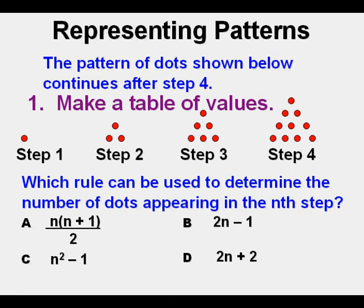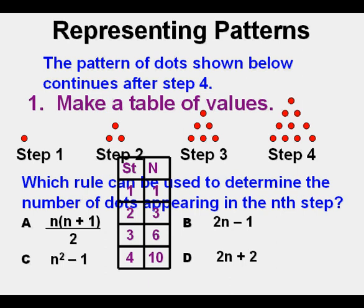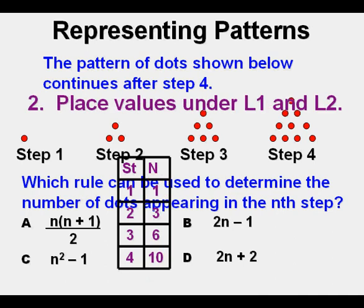We put the step number on the left as the independent quantities, and we put the number of dots as the dependent quantities on the right correspondingly. The next thing we do is place the values in our calculator under L1 and L2.